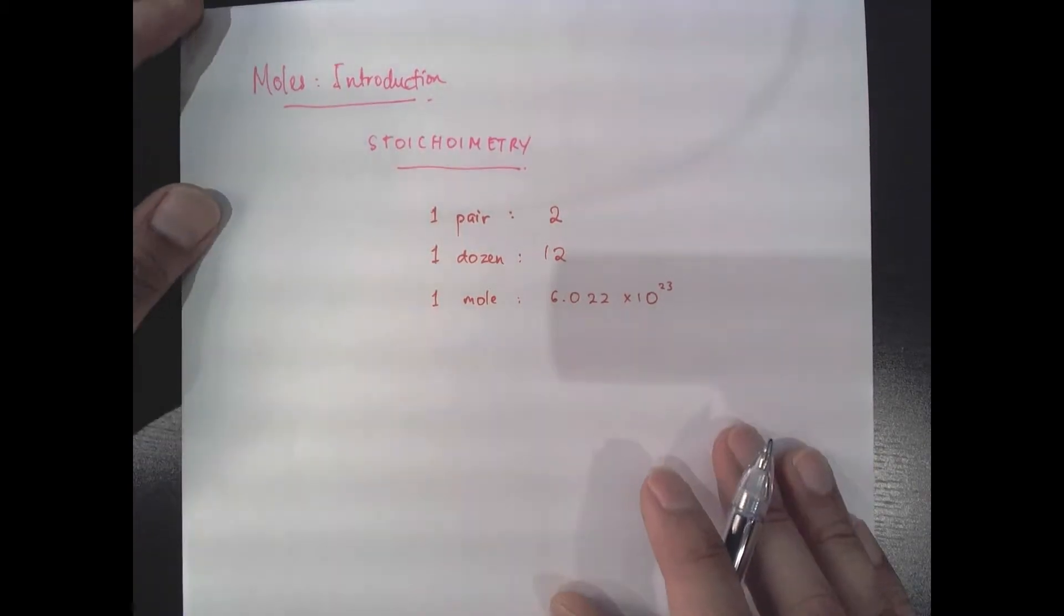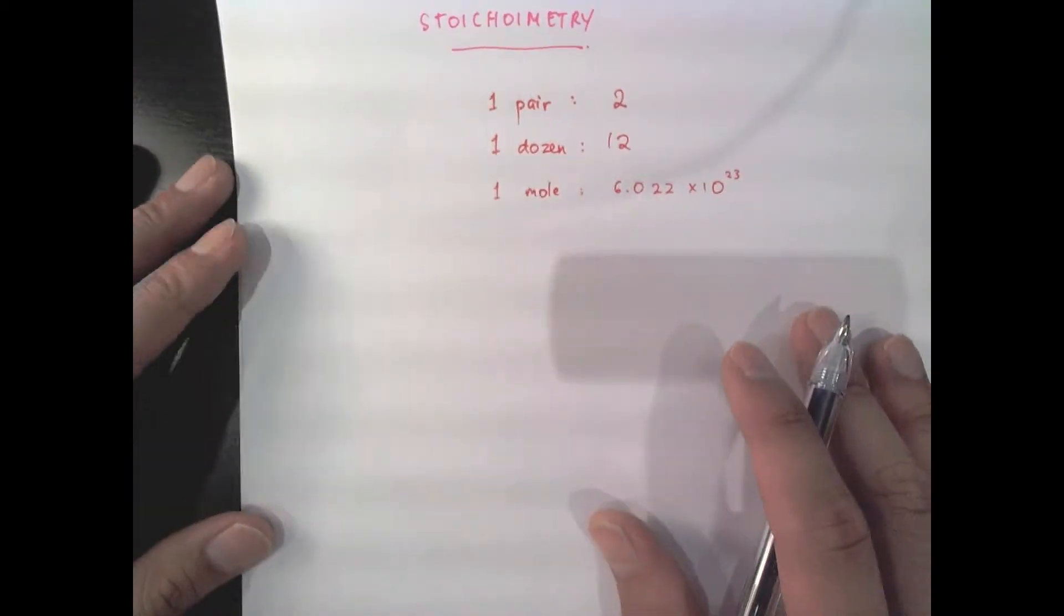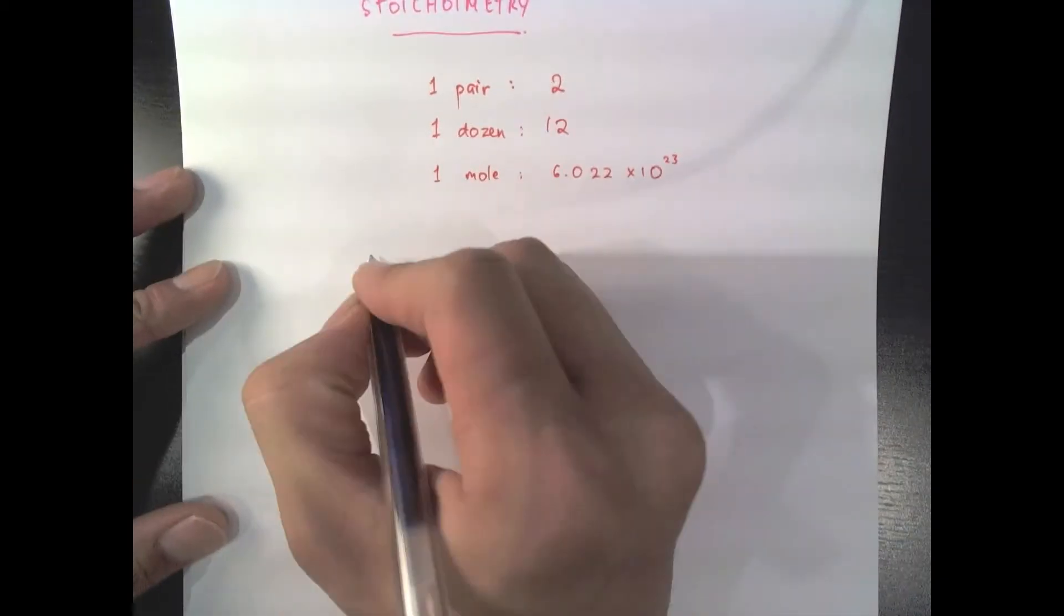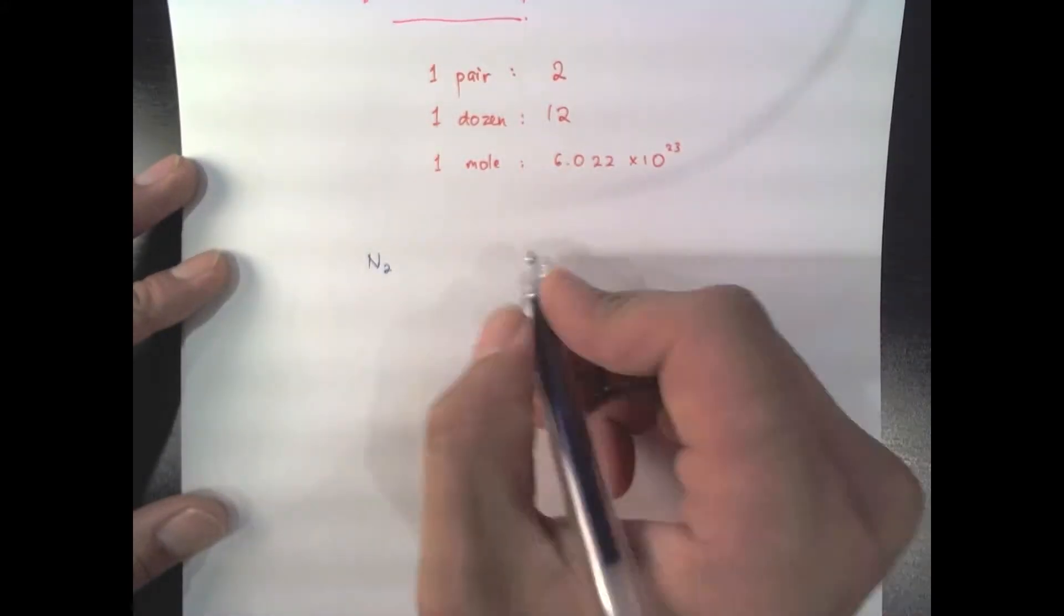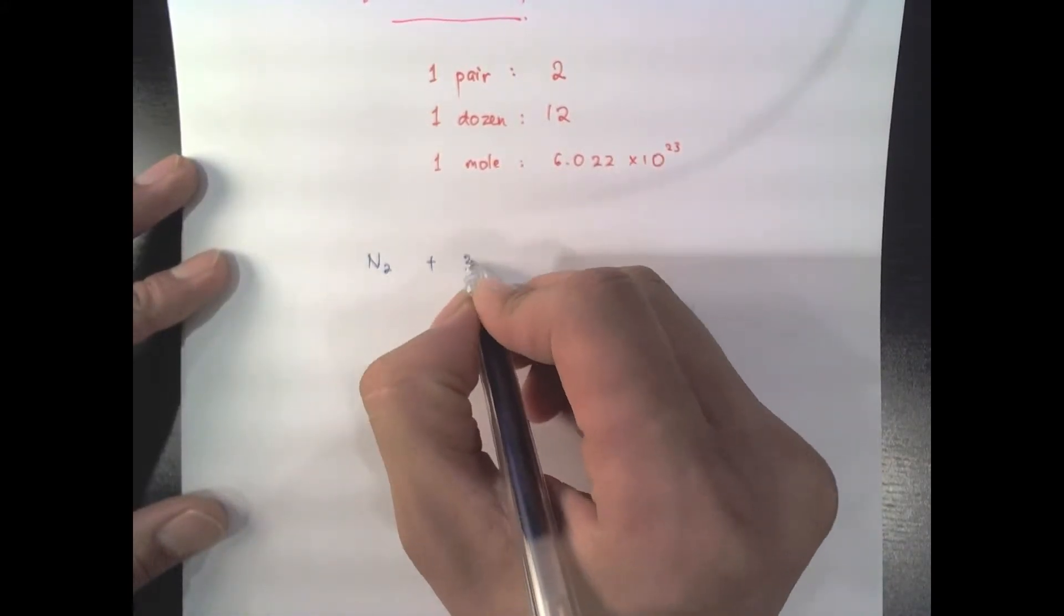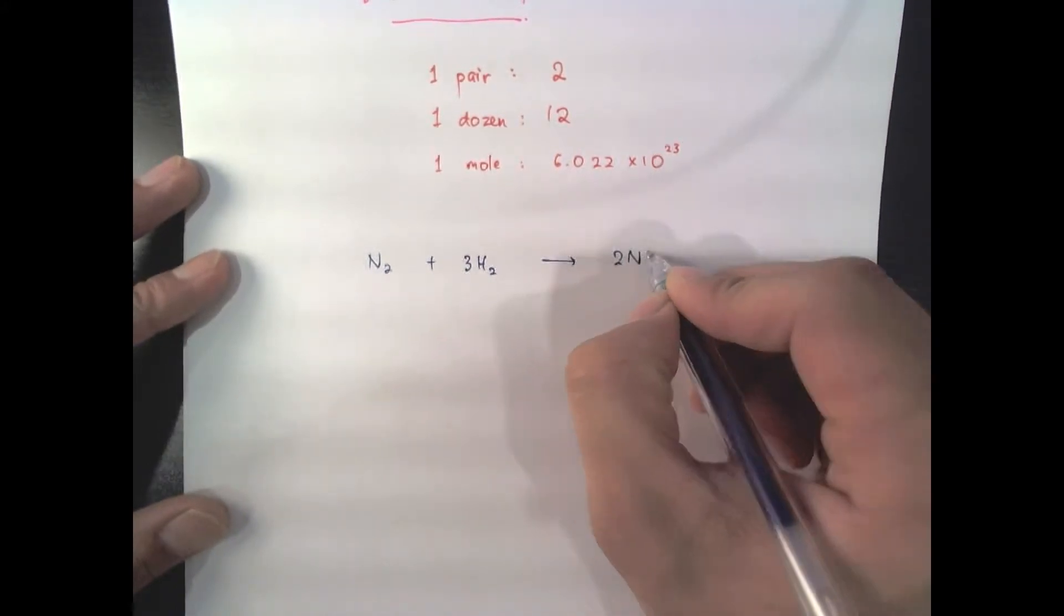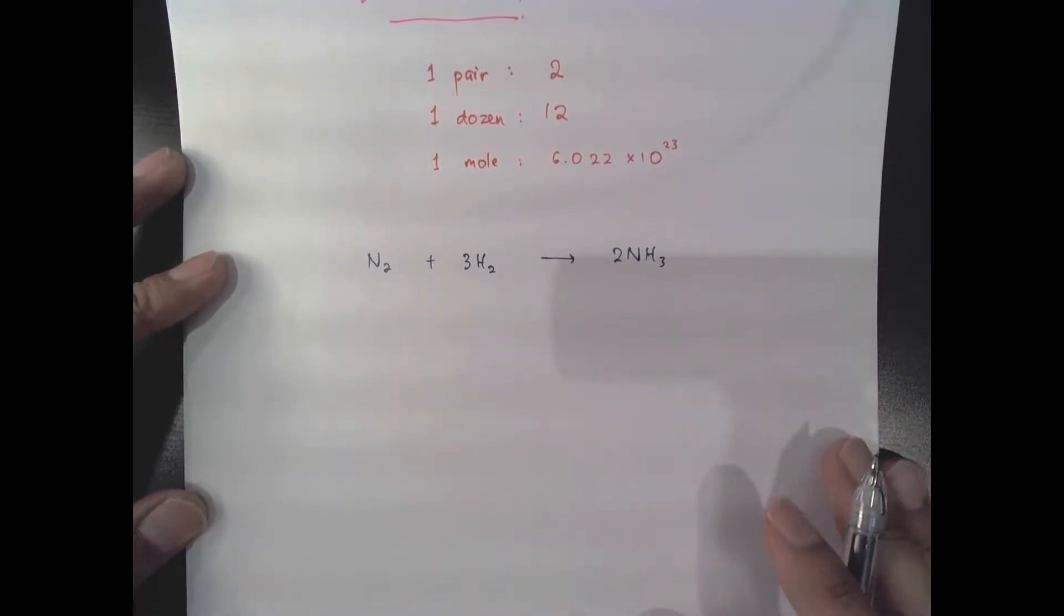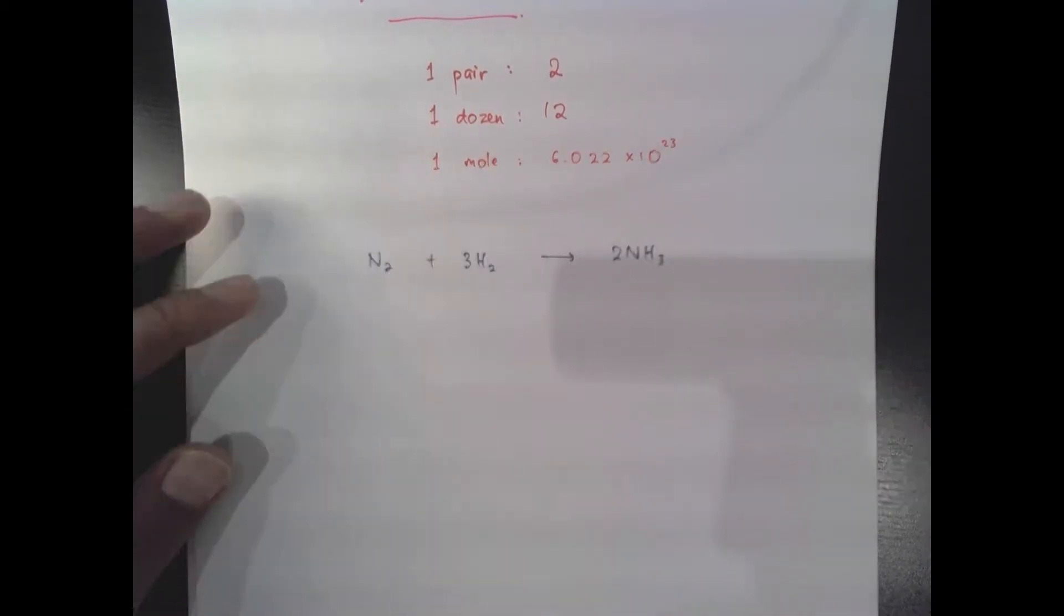Let's jump right into an application of mole in a chemical equation. We'll look at a very famous process called the Haber process where I take some nitrogen and react it with some hydrogen and I get some ammonia. Hopefully right now you already know how to balance chemical equations.